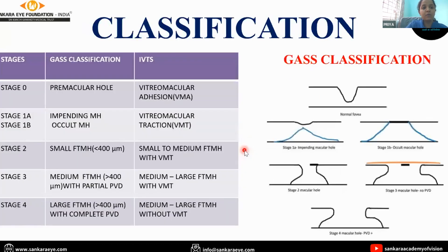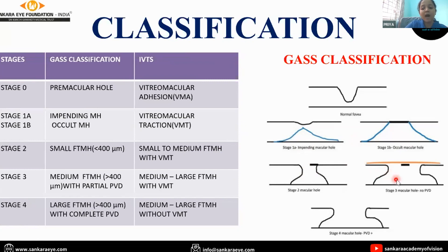There are various classifications for macular hole — the GAS classification and the IVTS classification. In the GAS classification: stage 0 includes pre-macular hole, stage 1a includes impending macular hole, stage 1b includes occult macular hole, stage 2 includes small full-thickness macular hole with minimum linear diameter less than 400 micrometers, stage 3 includes medium full-thickness macular hole of more than 400 micrometers with partial PVD, and stage 4 includes large macular holes with complete PVD.